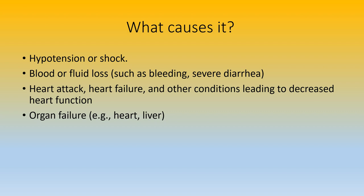Another cause could be a heart attack, heart failure, or other conditions leading to decreased cardiac output. If someone has low blood pressure and the body is supposed to increase heart rate to compensate, but the heart is affected and can't speed up or pump properly, circulation won't flow well. Organ failure — such as heart or liver — means organs aren't working to filter or circulate, and the kidneys, being major filtering organs, will develop either acute or long-term chronic issues.